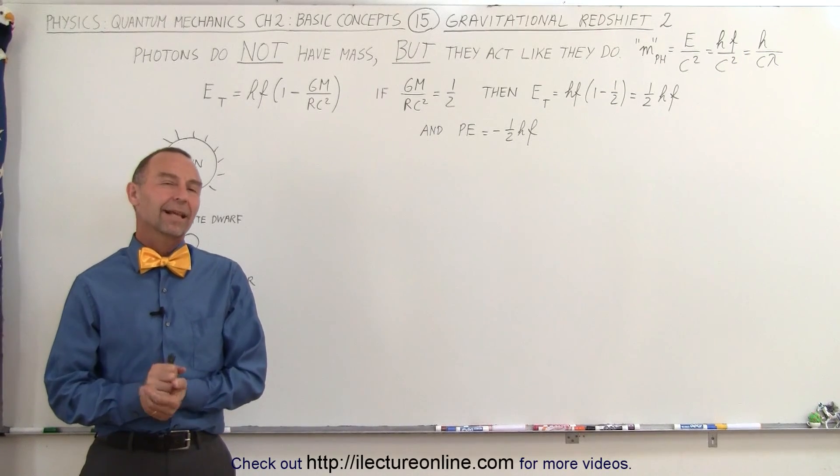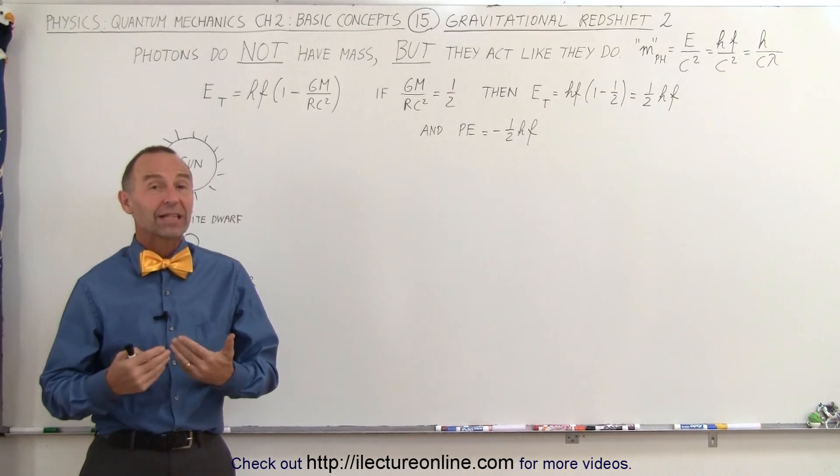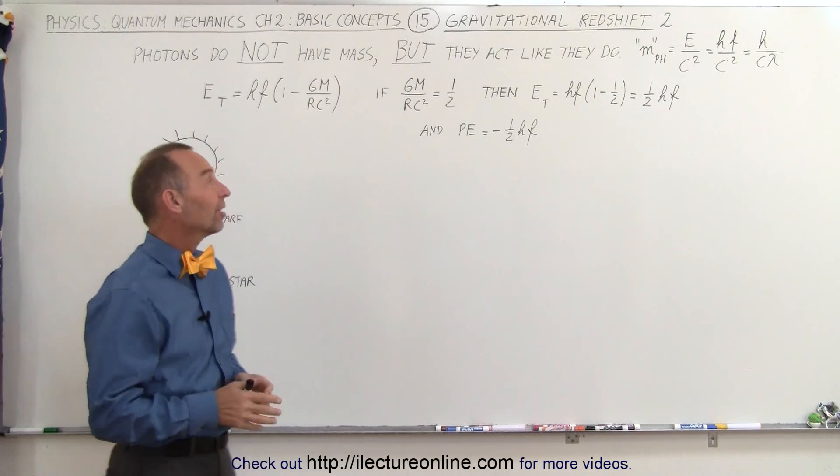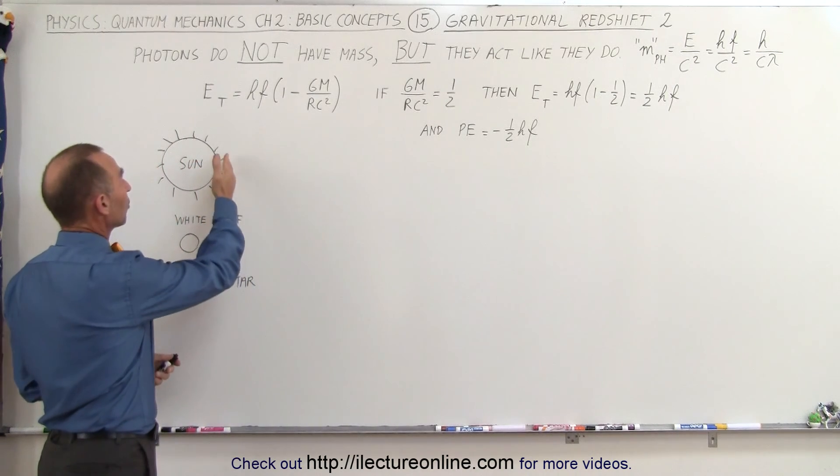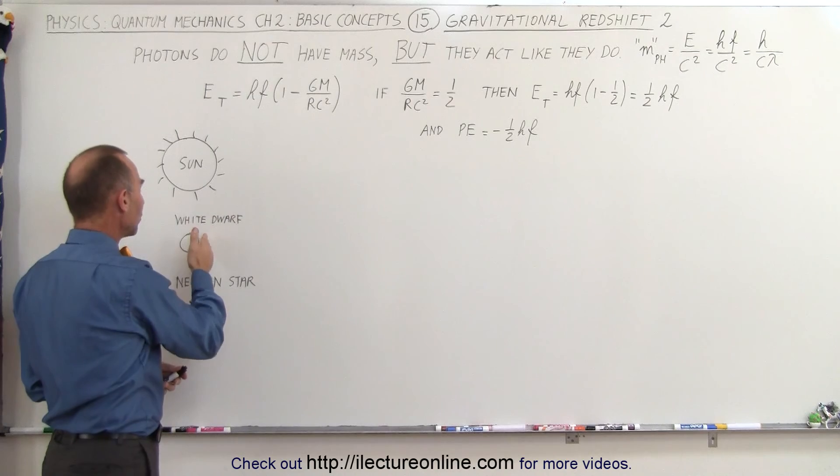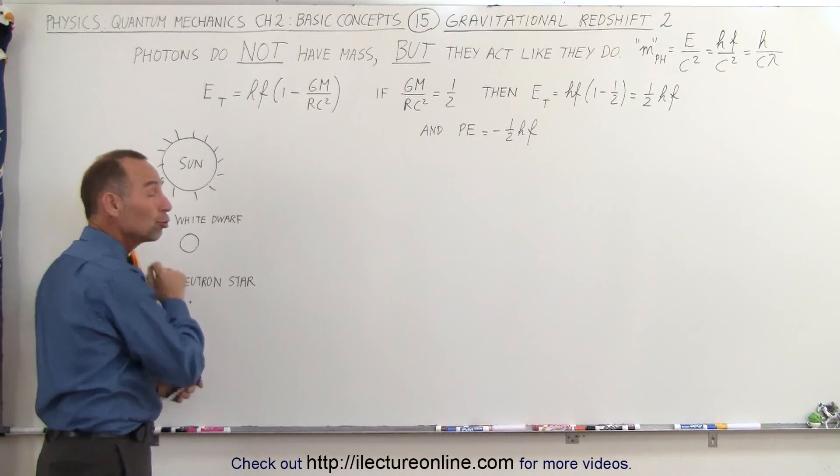Welcome to ElectronLine. Let's take a different look at the gravitational redshift. A photon trying to get away from the sun, a white dwarf, or a neutron star.